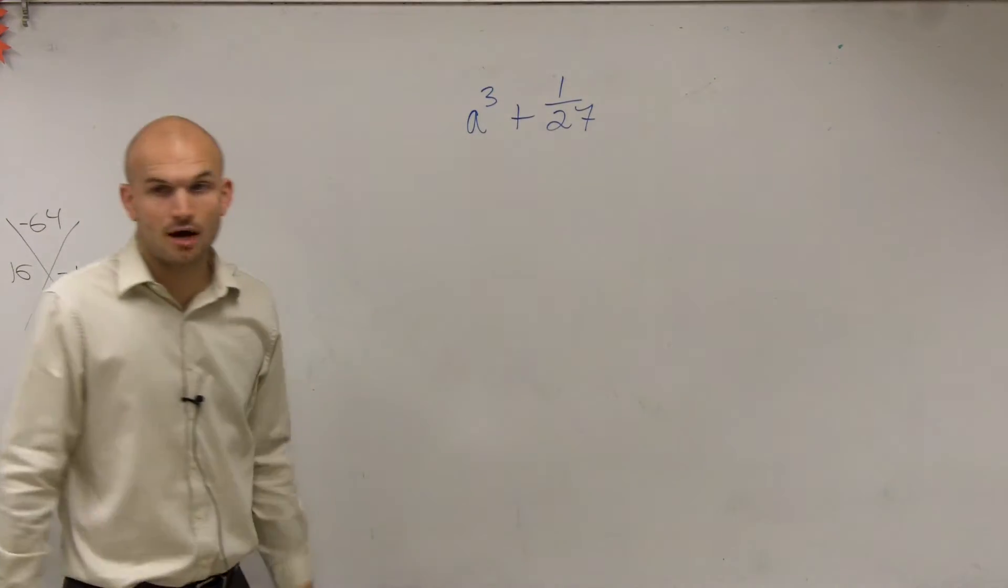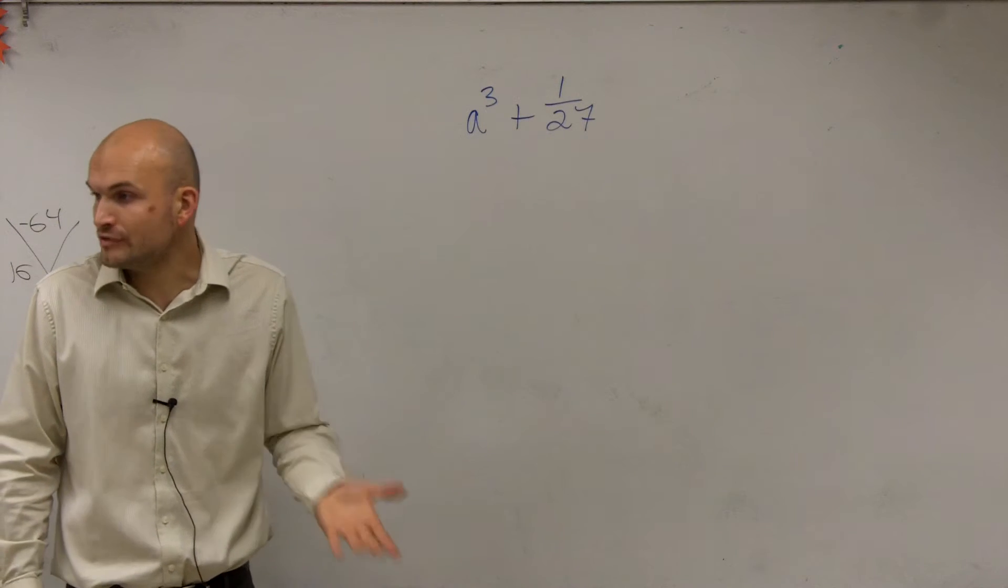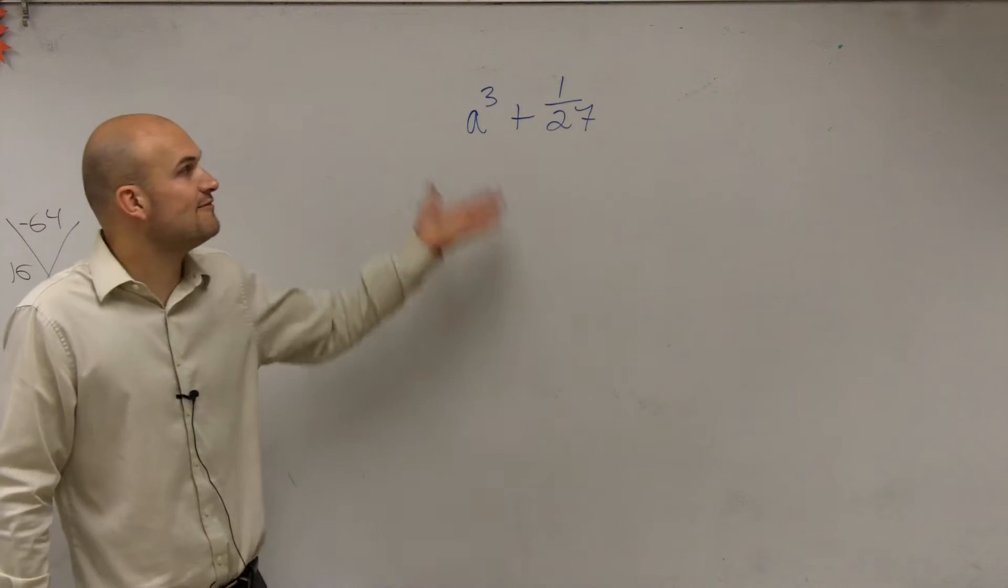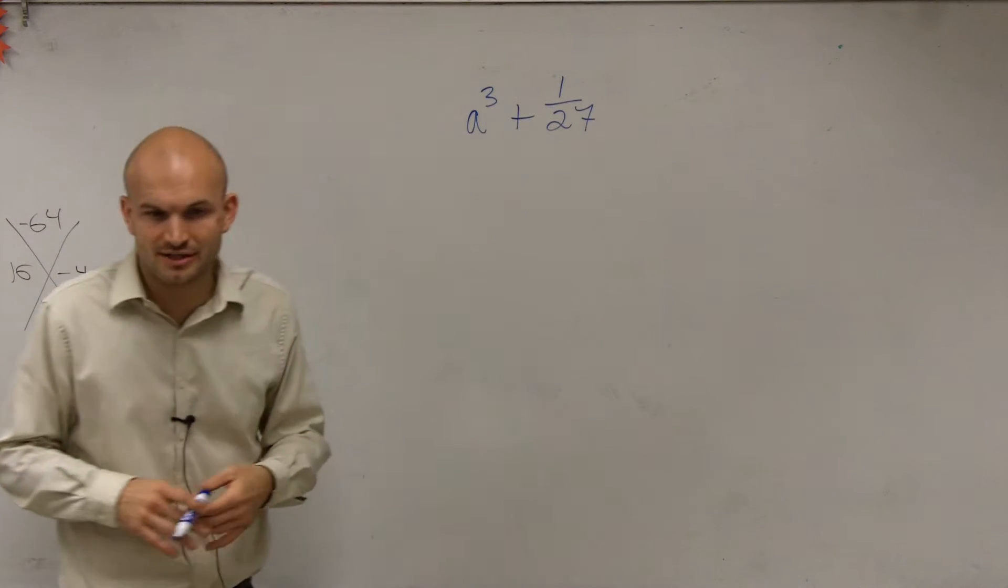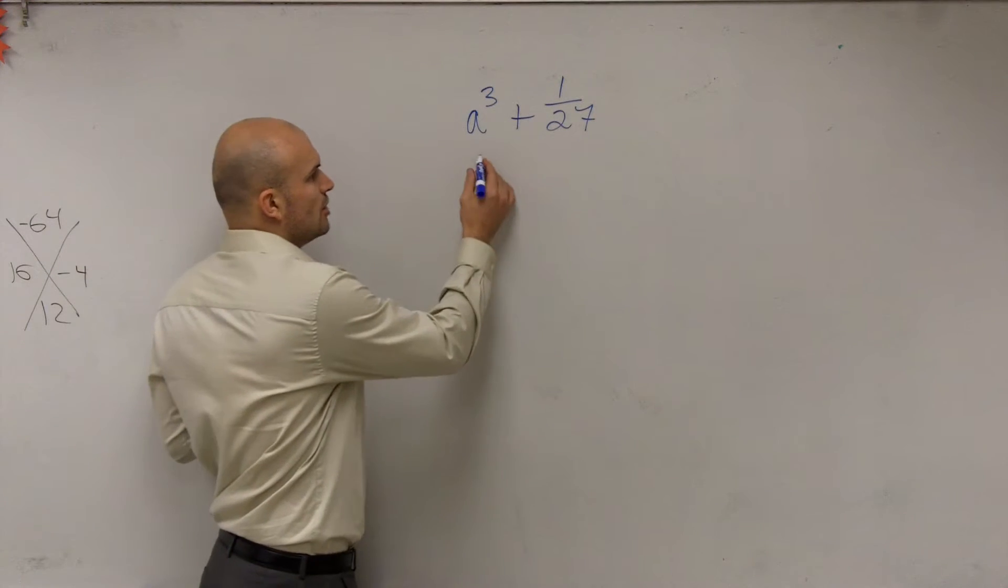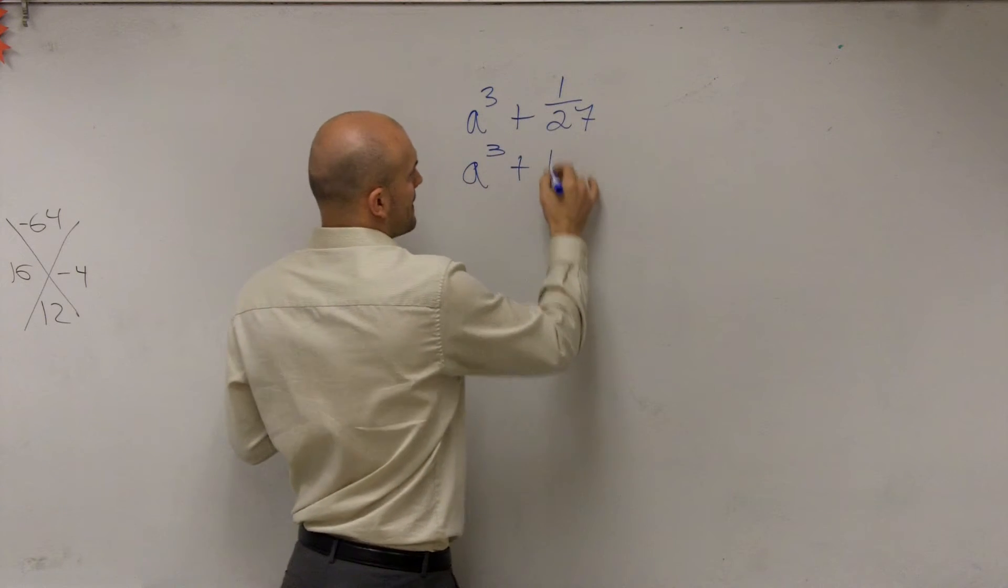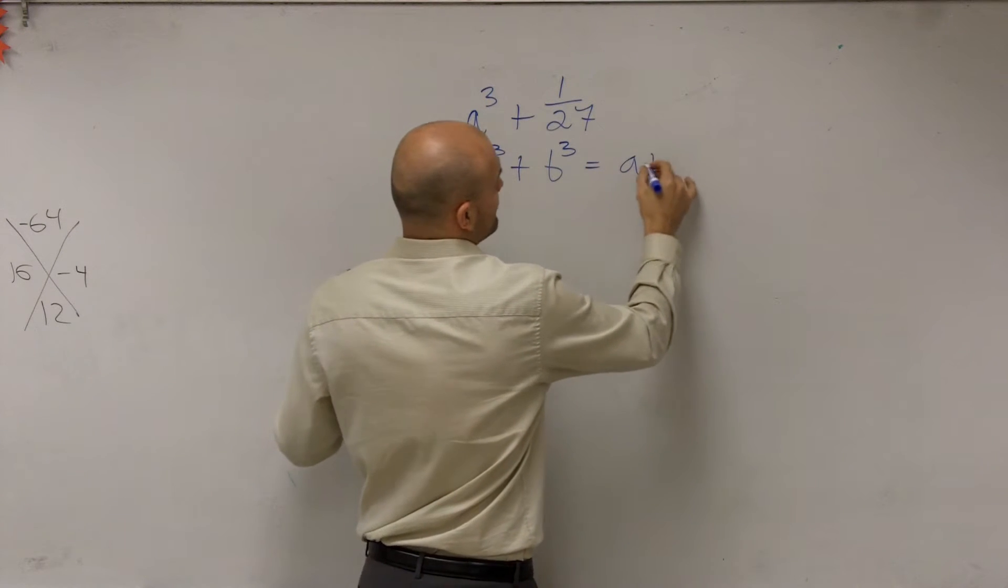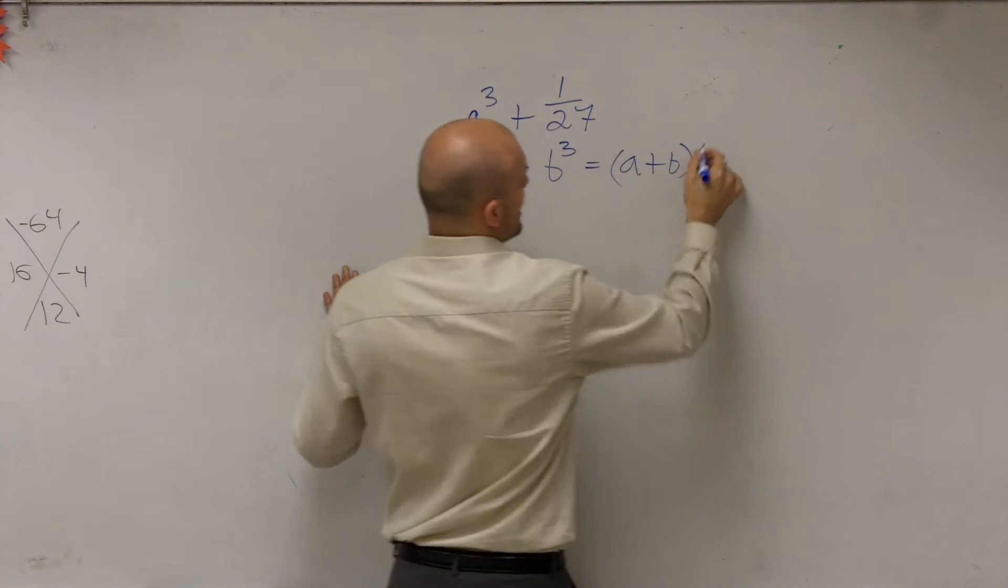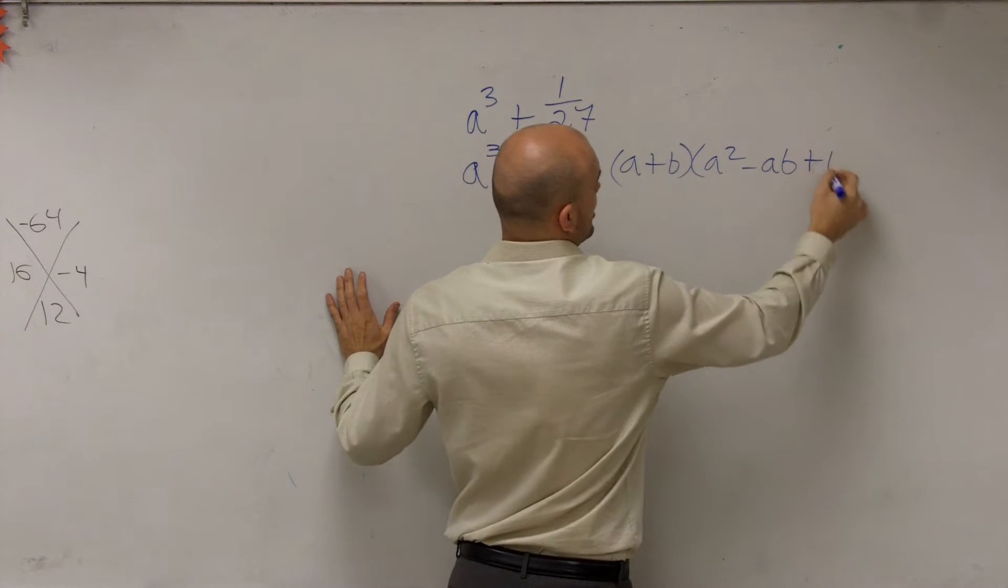We look at here and we have a sum, so we're going to be looking at the sum of cubes. If we have the sum of two cubes, that means we have a³ plus b³, and that can be written as (a + b) times (a² - ab + b²).